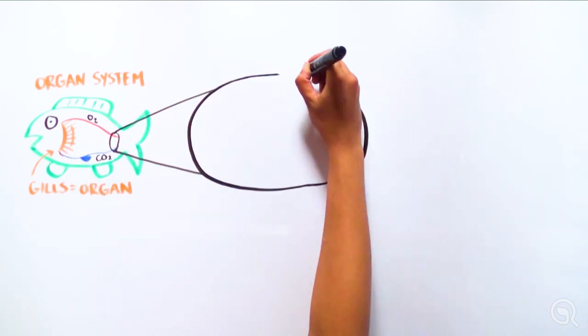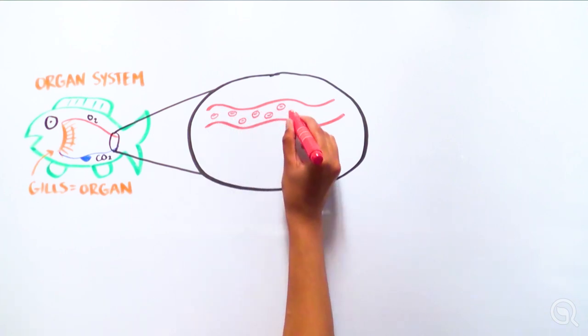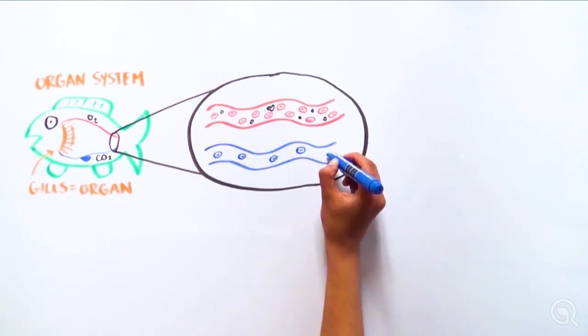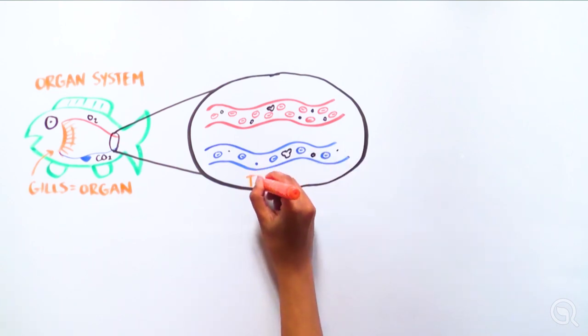Below the organ is a tissue, or a group of cells that work together to perform a function, such as blood tissue involved in the transport of oxygen and carbon dioxide.